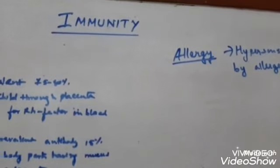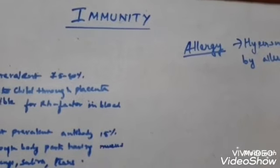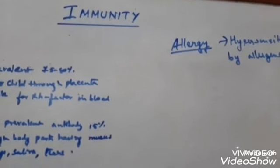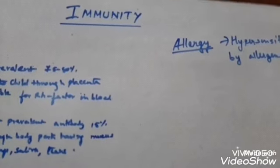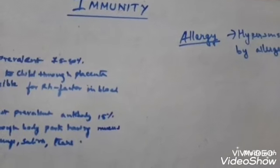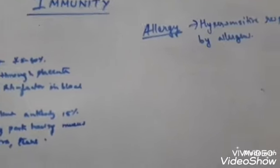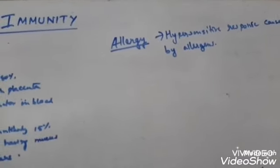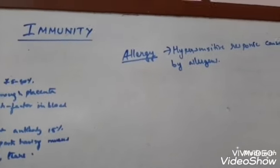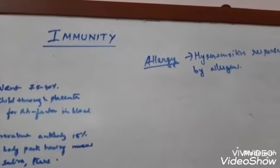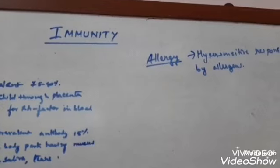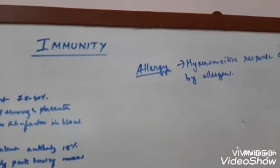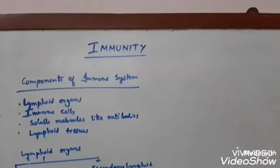Drugs like antihistamines, adrenaline, or steroids are given to allergic patients to quickly reduce symptoms. Allergies are very common, especially in children in metro cities, due to high levels of pollutants, low immunity, sedentary lifestyles, and environmental pollution. For determining the cause of allergy, a patient undergoes an allergy test — exposed to a small dose of the allergen — and the effect on the body is studied.